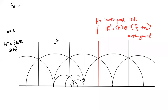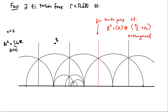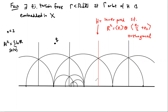There's a fact: there exists a finite index torsion-free subgroup gamma in SL(n,Z) so that the gamma-orbit of H is embedded in X. In the picture the SL(2,Z)-orbit is not embedded because there are intersections, but passing to a finite index subgroup fixes this. Now let's take such a gamma and a vector bundle with structure group gamma.